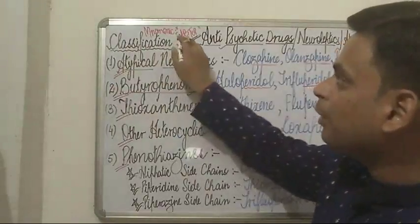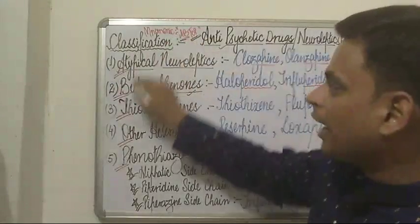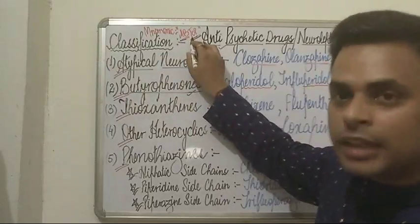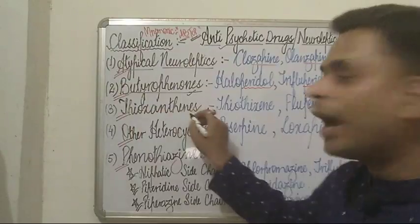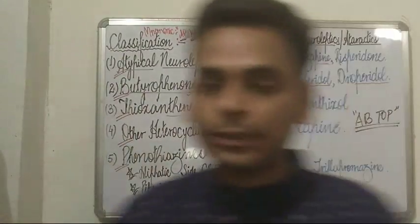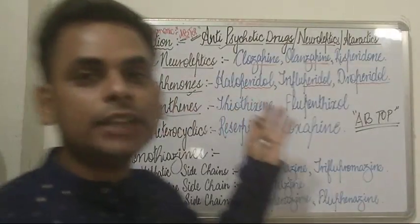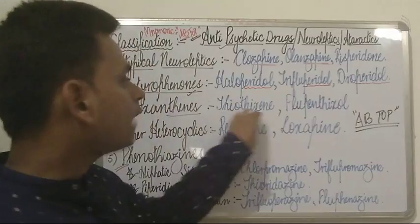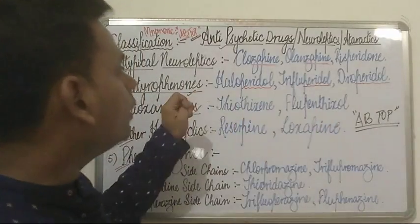Moving to the 'T' of TOP, which refers to the thioxanthines. These are the third class of drugs used in the treatment of psychosis patients. The thioxanthines comprise two famous drugs: thiothixene and flupentixol.